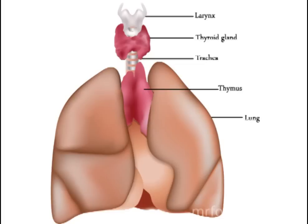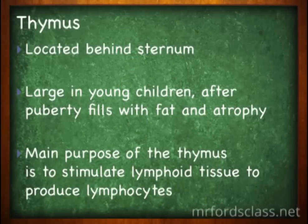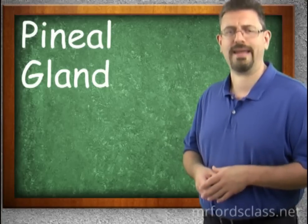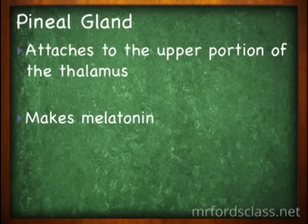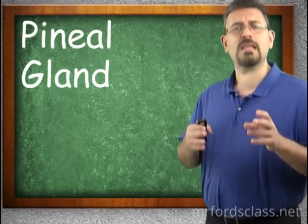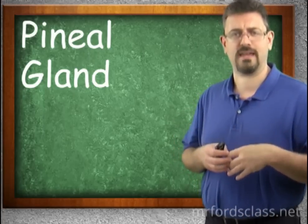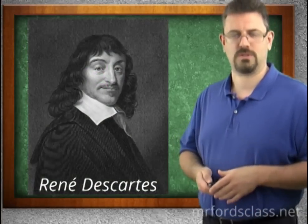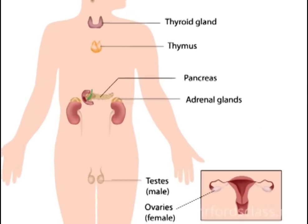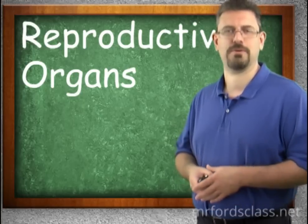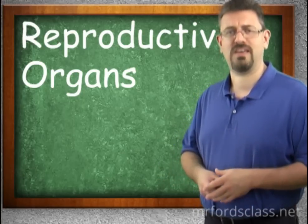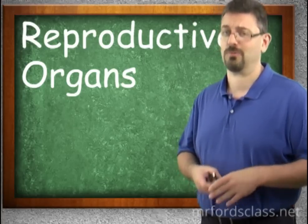Moving up to behind the sternum, we find the thymus. It serves an important function in young people, but once you hit puberty it starts to atrophy and fill with fat. Its main purpose is to stimulate lymphoid tissue to produce lymphocytes. The pineal gland is located within the brain — a small ovoid gland located deep between the cerebral hemispheres, attached to the upper portion of the thalamus. It makes melatonin. Further down, the reproductive organs — the ovaries, placenta, and testes — also produce hormones, which we'll cover in the reproductive system and later endocrine lessons.